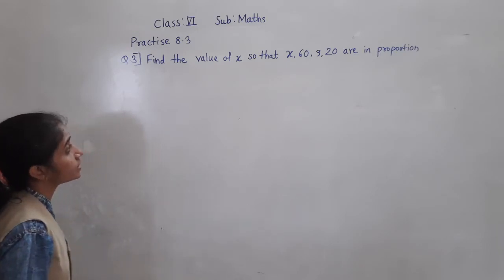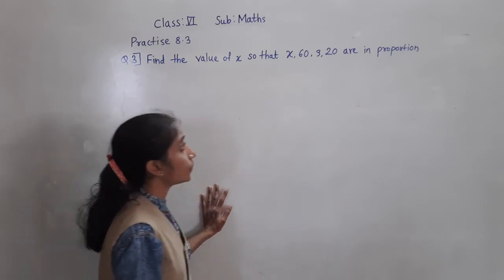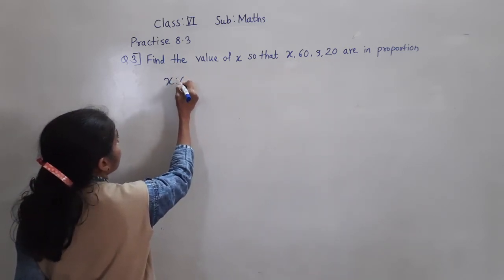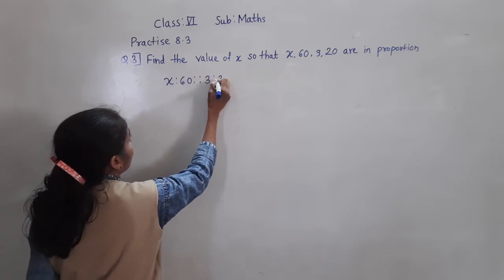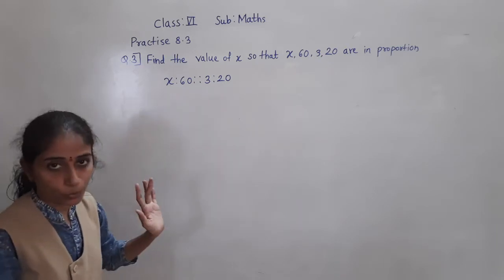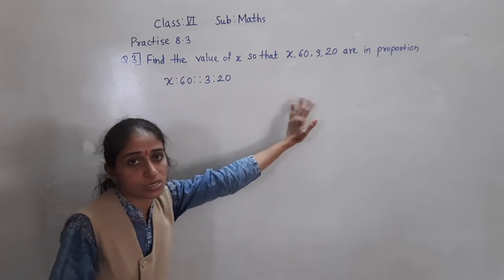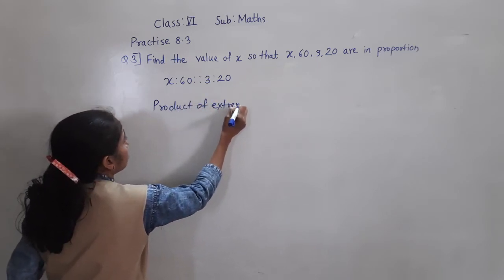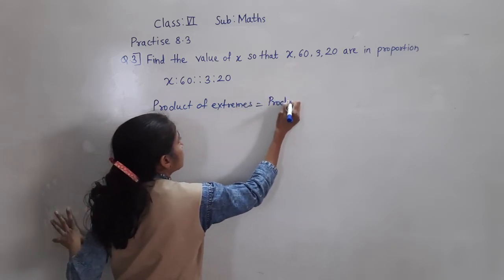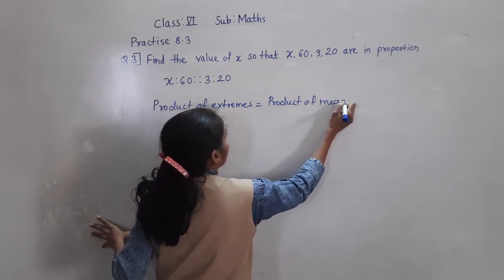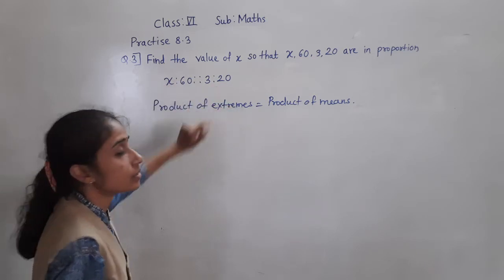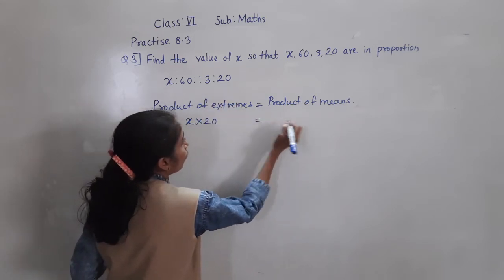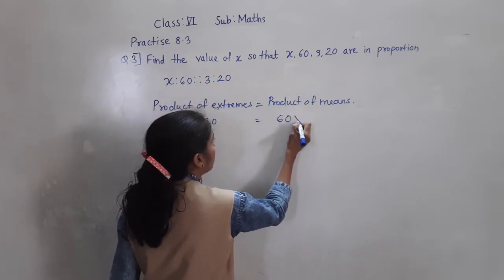Question number 3: Find the value of X so that X, 60, 3, and 20 are in proportion. So X is to 60 proportion 3 is to 20 - we have to find the value of X. Product of extremes is equal to product of means. Which are the extremes? X and 20 - these are the extremes. So X into 20. And product of means - which are the means? 60 and 3 - these are the means. So 60 multiplied by 3.